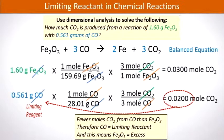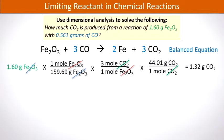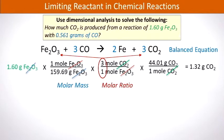In this problem we determined the limiting reactant by finding the least number of moles obtained. We can carry out the same process by determining how many grams are produced. Starting with 1.60 grams of iron(III) oxide, we convert grams to moles using the molar mass, then use the balanced equation to interconvert moles of iron(III) oxide to moles of carbon dioxide, and finally convert moles of carbon dioxide to grams — giving 1.32 grams of carbon dioxide, 3 sig figs.